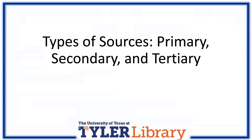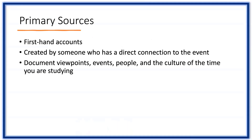A single source can be primary, secondary, or tertiary, or a combination of them depending on the context you use it in. Primary sources are first-hand accounts of an event. They are created by someone who has a direct connection to the event in question. They document viewpoints, events, people, and the culture of the time you are studying.